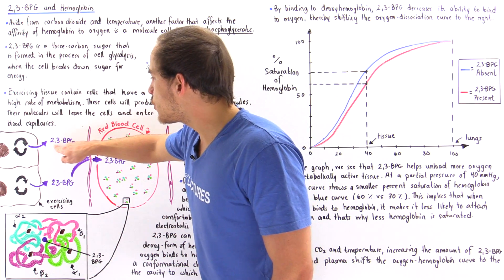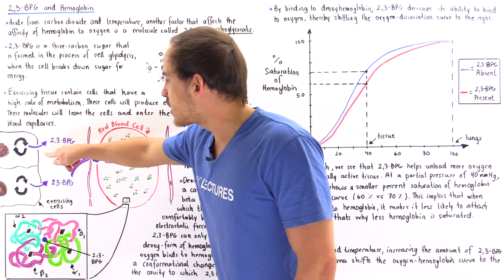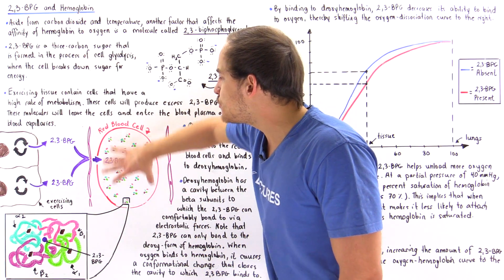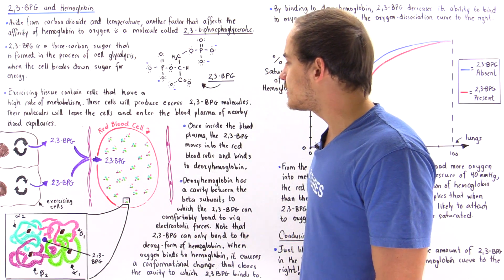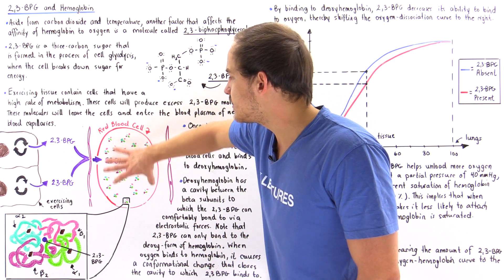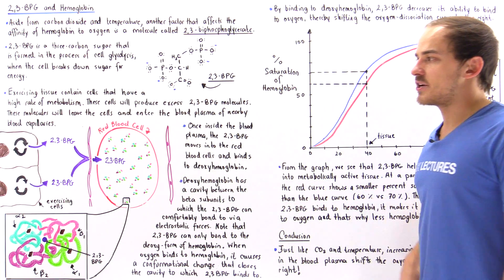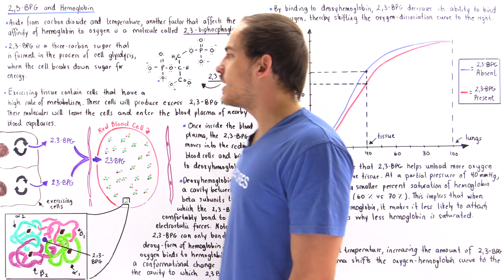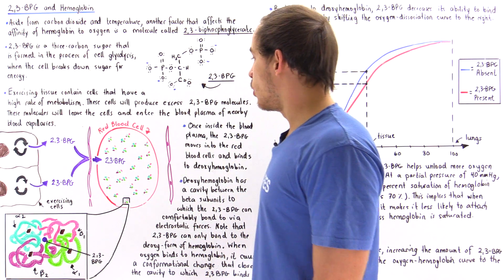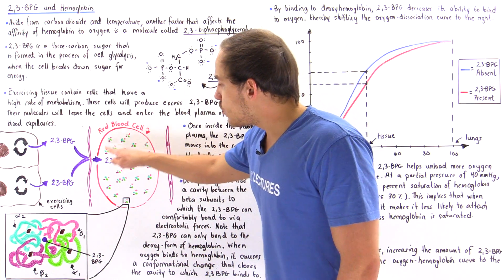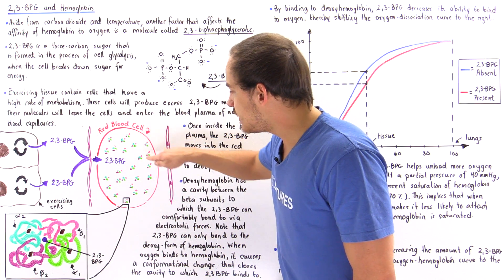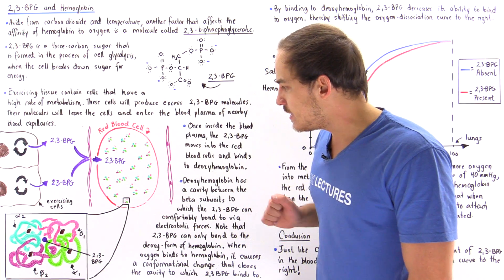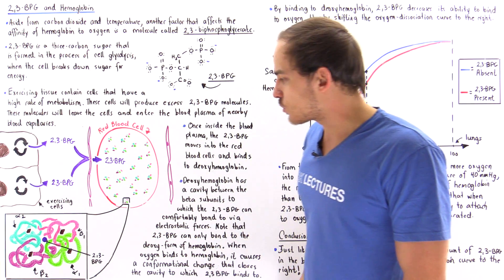Once the 2,3-BPG molecules enter the matrix, they diffuse via the capillary wall into the blood plasma found inside the capillary, which contains red blood cells — erythrocytes that carry our hemoglobin proteins. Within each red blood cell, we have many hemoglobin proteins, and if we zoom in on a single hemoglobin, this is what we see.